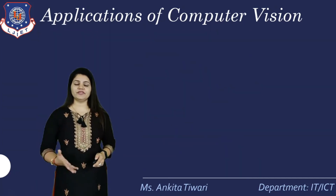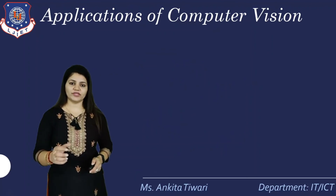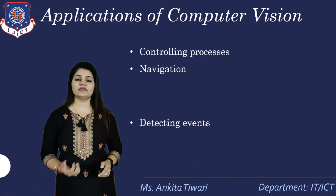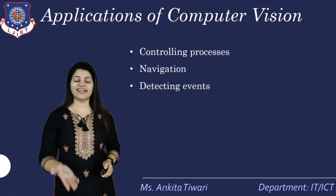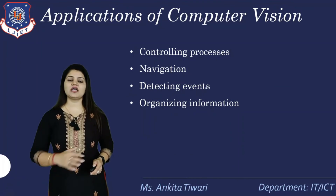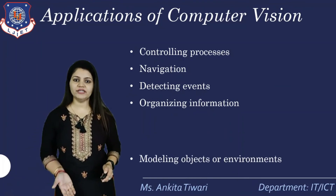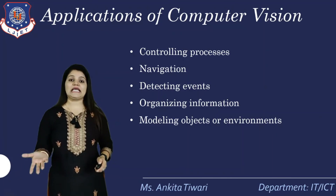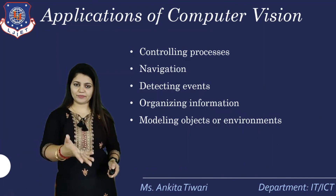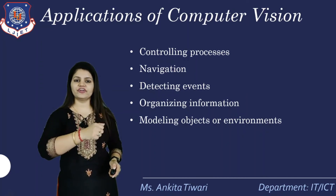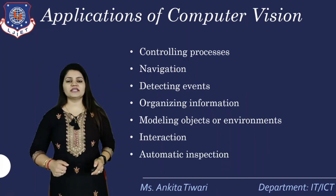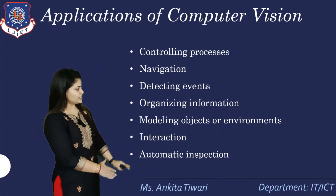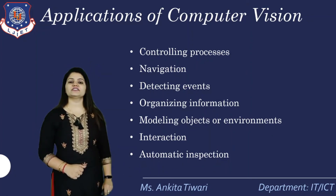After this we are discussing the application part. Applications of computer vision include: controlling processes, then navigation where computer vision is being used, detecting events and different events, organizing different information in a particular format, modeling the objects or environments — you already know 2D modeling — interaction, and automatic inspection. These are the different applications where computer vision is being used.